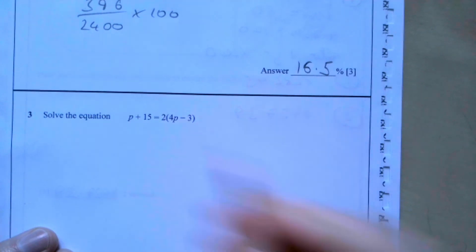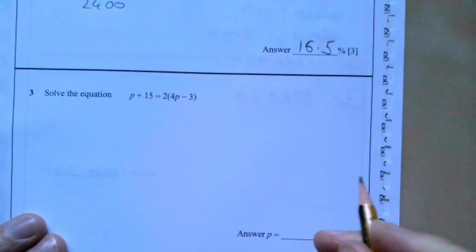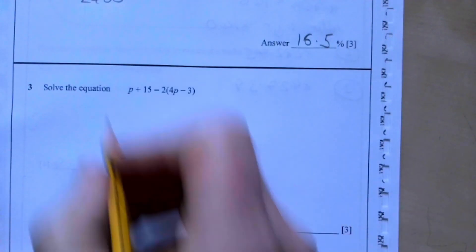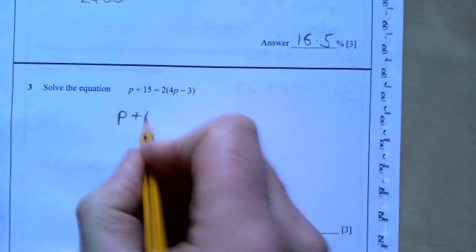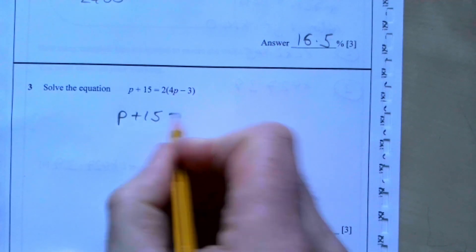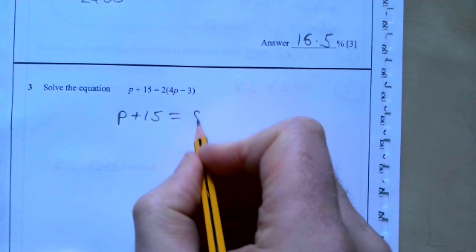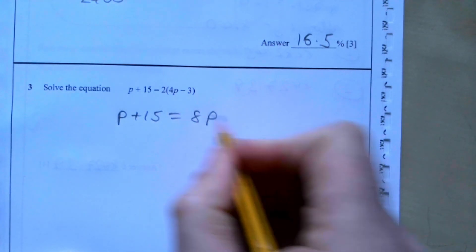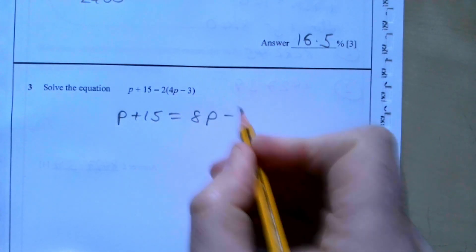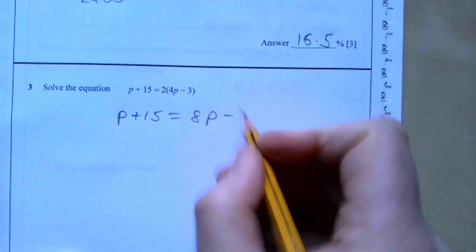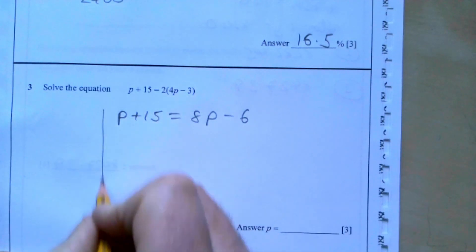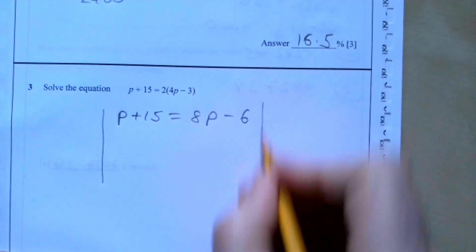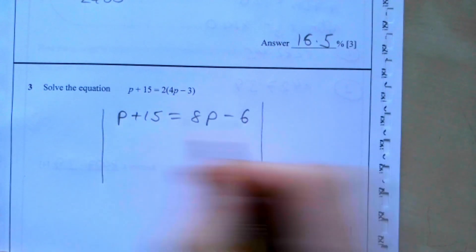Question three: Solve the equation p plus 15 equals 2 upon 4p minus 3. The first thing we need to do is multiply out the bracket. 2 times 4p is 8p, and 2 times minus 3 is minus 6.